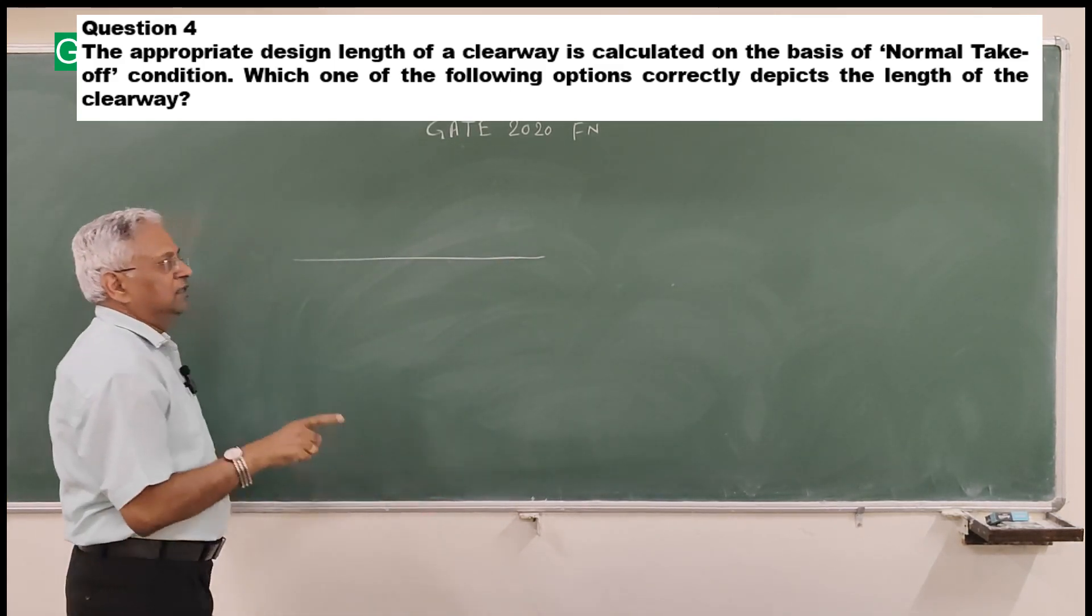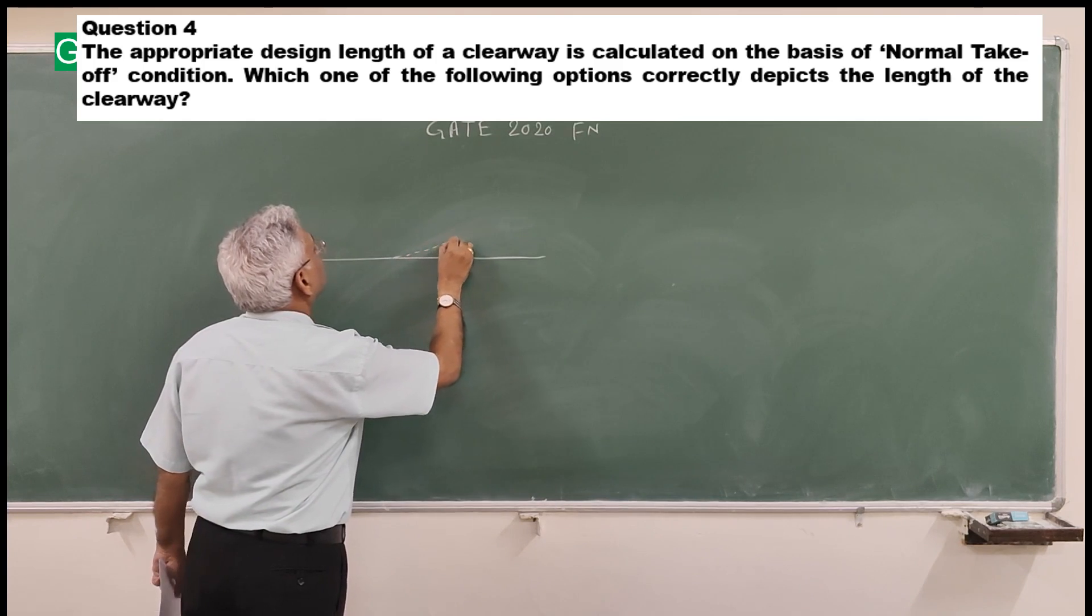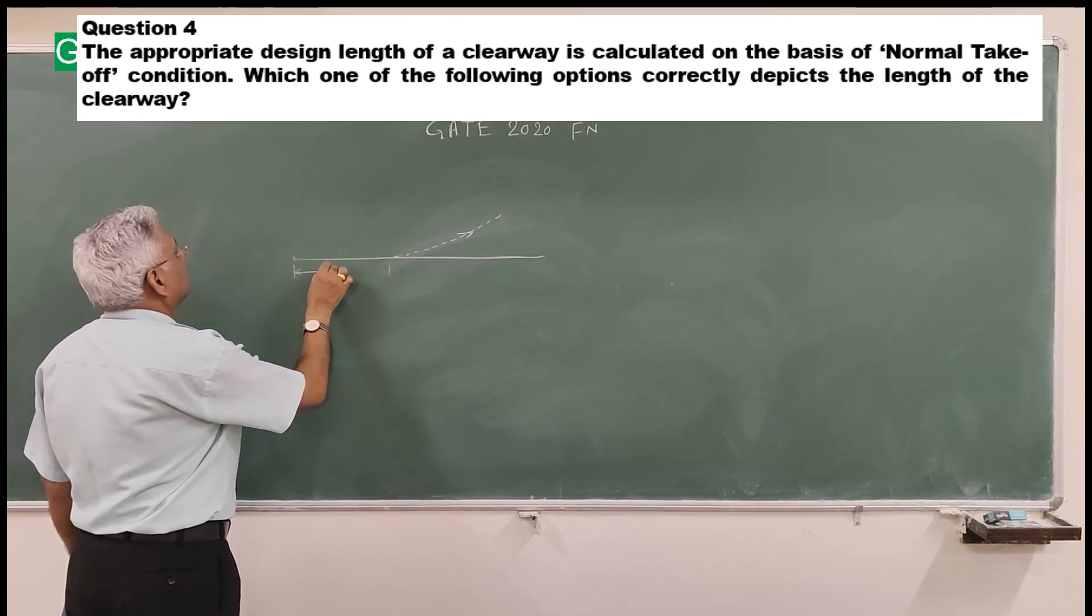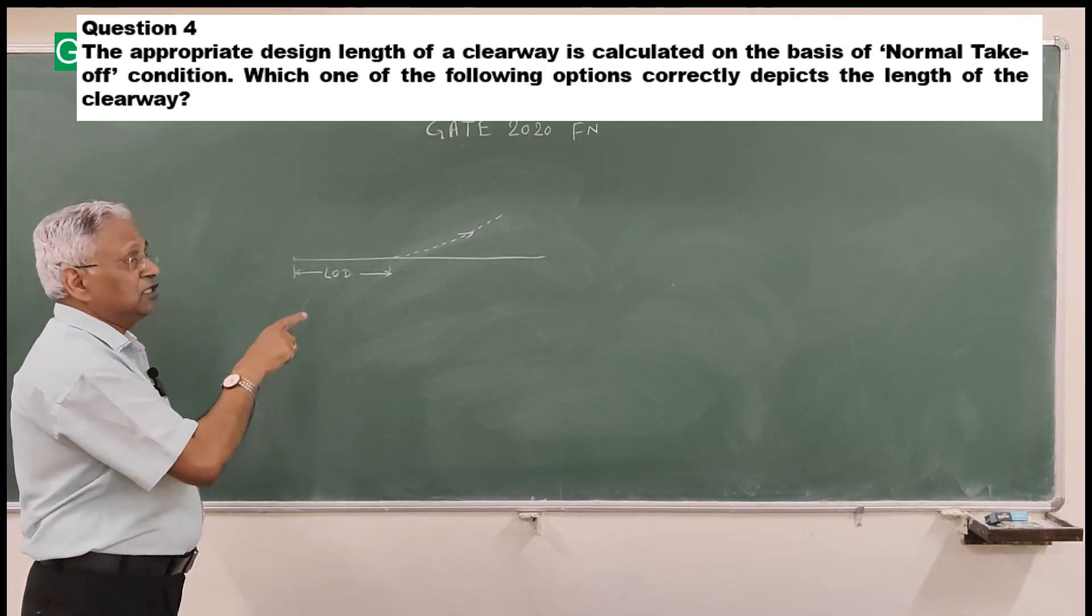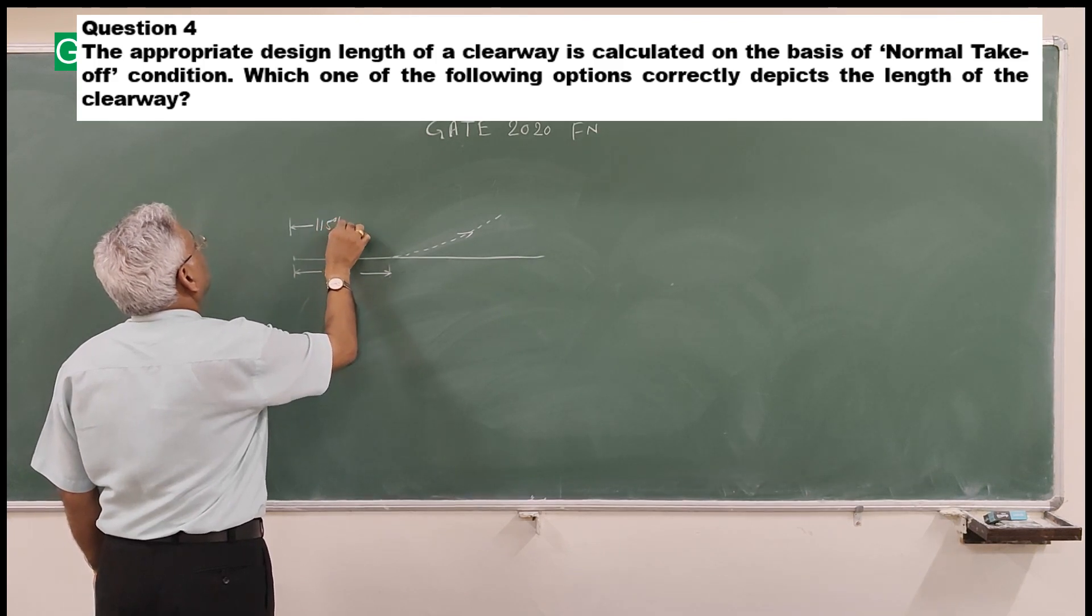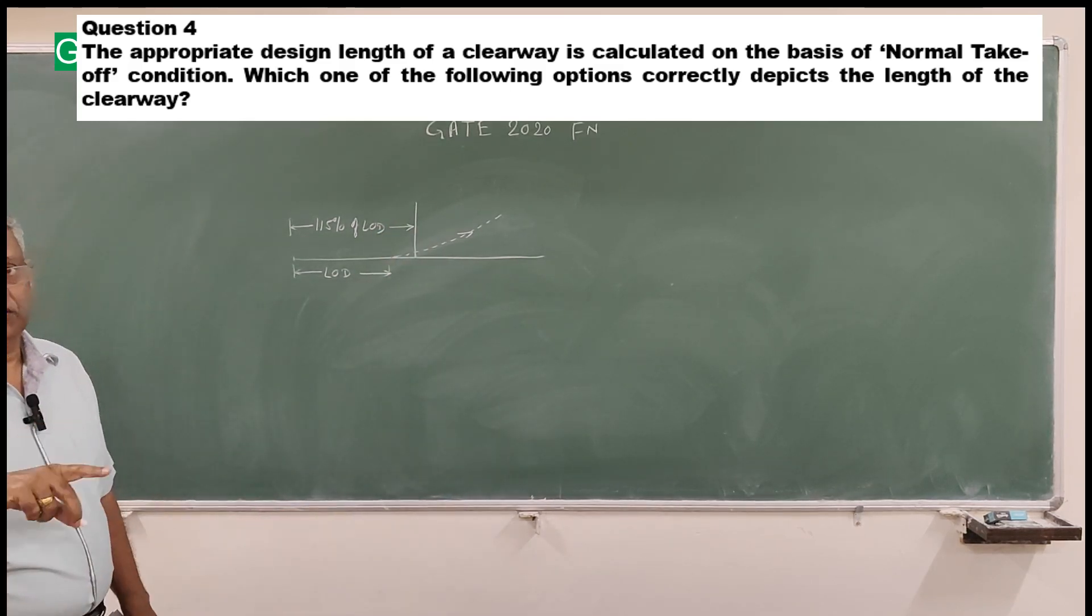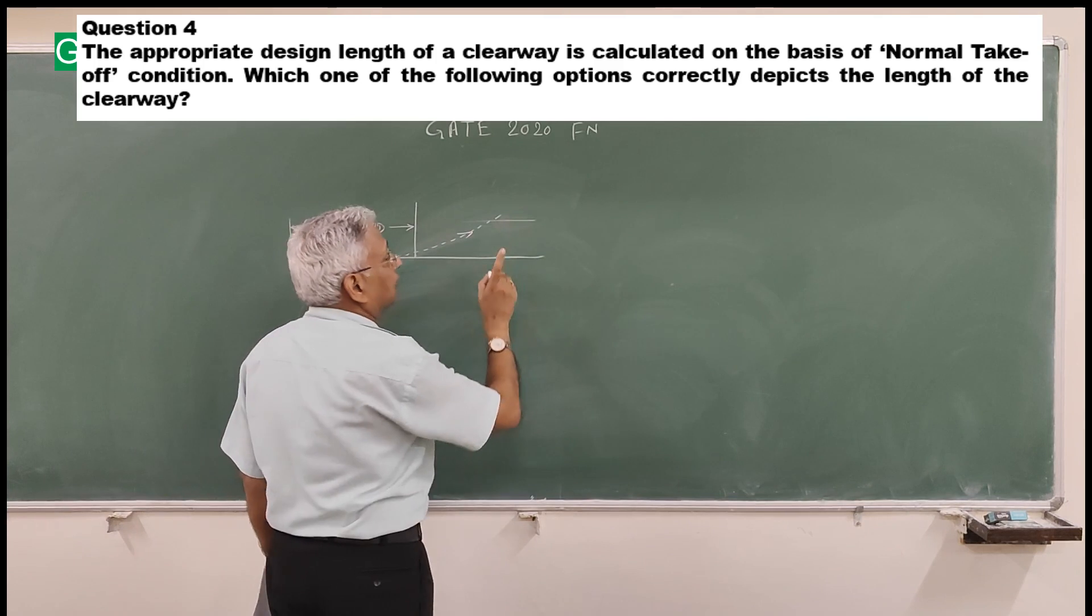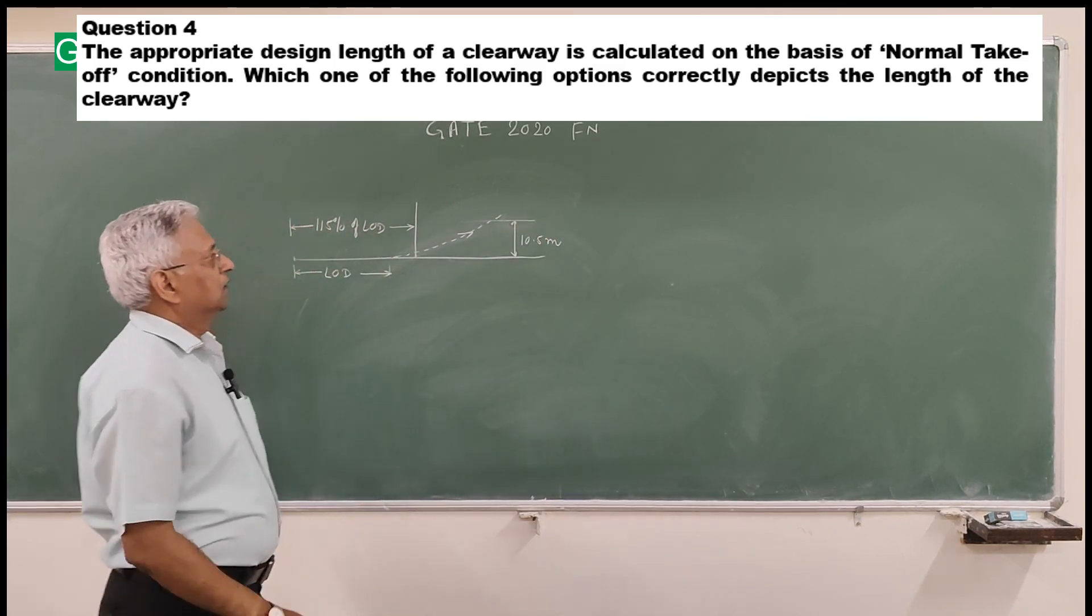This is the runway. The aircraft will start its takeoff run from this end and let us say it leaves the runway at this point. This is what we call the lift off distance, LOD. It basically leaves the ground. Then just to take care of variations among pilots, it is taken 115% of LOD. This is the length, 115% of lift off distance. The aircraft is considered to have taken off successfully when it attains the height of 35 feet, that is 10.5 meter.